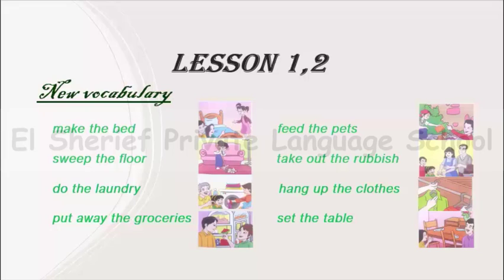Number 7: put away the groceries. When you buy some groceries, you put them away to put everything in its place. Number 8: set the table — to put the forks, spoons, and plates in their places on the table to have your meal.